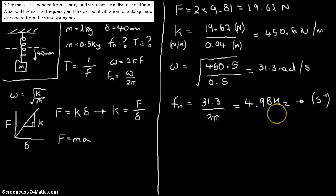And, lastly, our time period, t, is equal to our 1 over f, we said earlier. So, 1 divided by 4.98 and that will come out as 0.2, roughly, seconds. And, there we have it. We've got our time period and our frequency here in terms of the 0.5 kg mass. Job done.